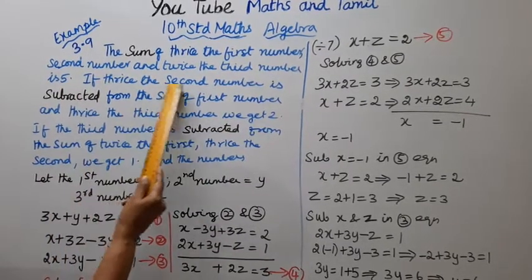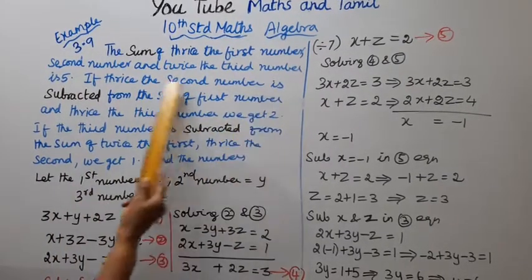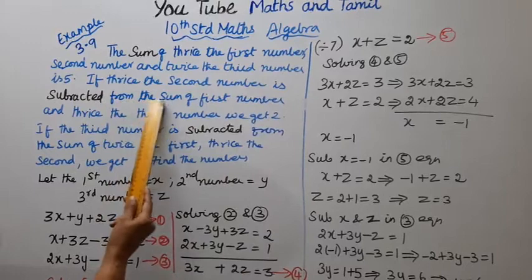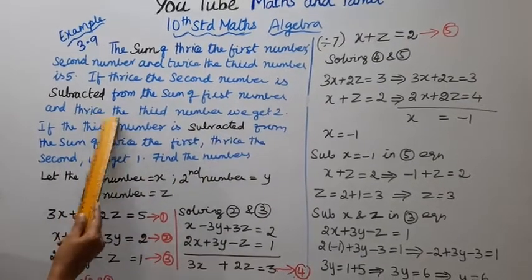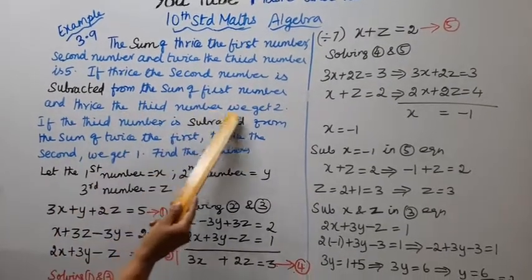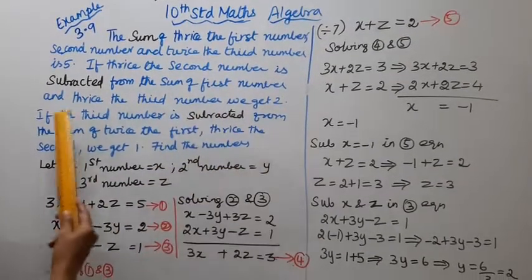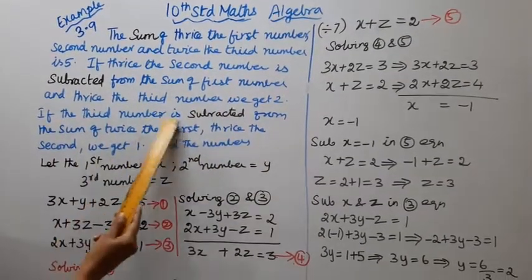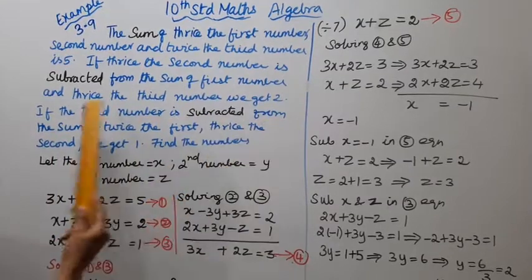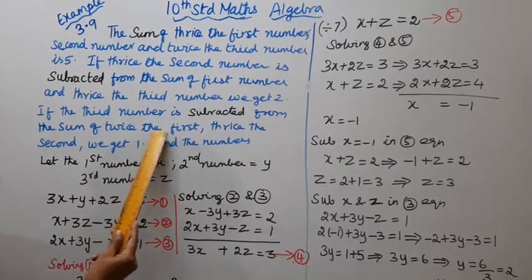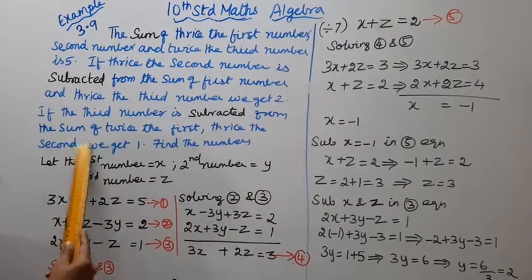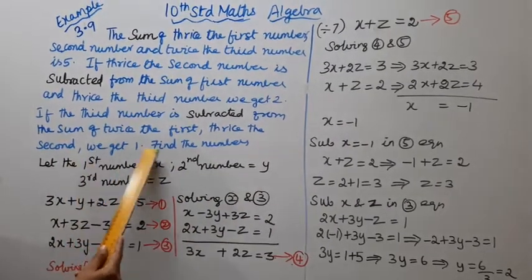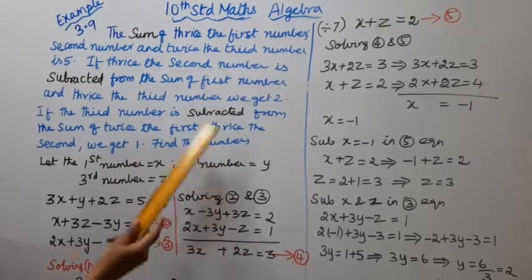If thrice the second number is subtracted from the sum of first number and thrice the third number, we get 2. If the third number is subtracted from the sum of thrice the first and thrice the second, we get 1. Find the numbers.